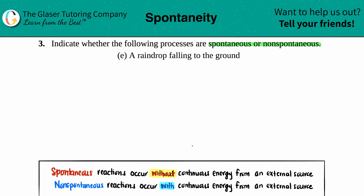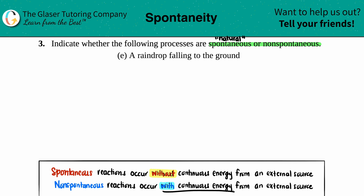Spontaneous reactions occur without any continuous energy from an outside or external source. To put it another way, spontaneous reactions are natural — they just happen naturally under whatever conditions apply. Non-spontaneous reactions are the opposite: they need a continuous amount of energy from an external source, so you could think of non-spontaneous as 'not natural.'